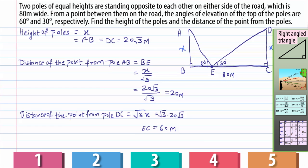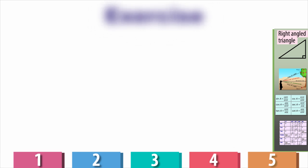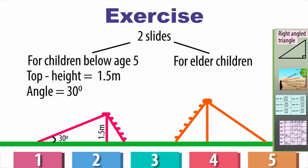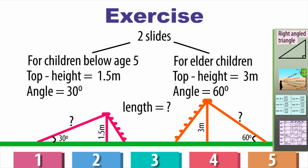So now, as we have solved the question and we have also cross-checked it, let's do something more. Suppose, there is some other condition where a builder wants to install two slides, one for the children below age 5. So, he prefers a slide whose top is at a height of 1.5 meters and that slide should make an angle of 30 degrees to the ground. Whereas, for the elder children, he wants to have a slide at a height of 3 meters making an angle of 60 degrees to the ground. So, what should be the length of the slide in each case?